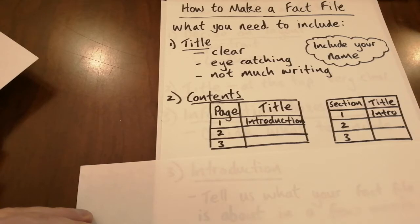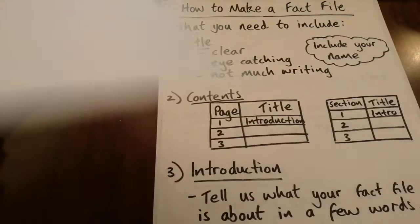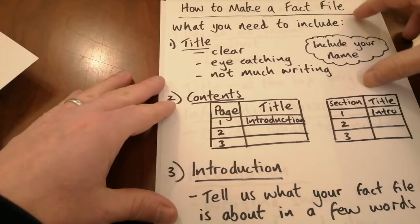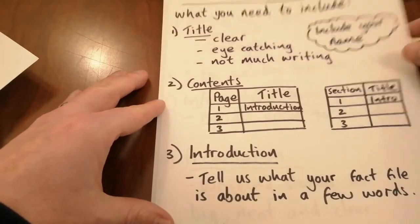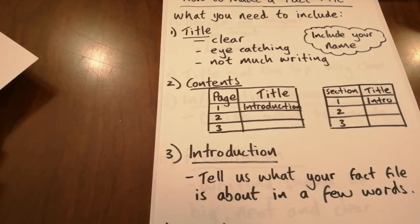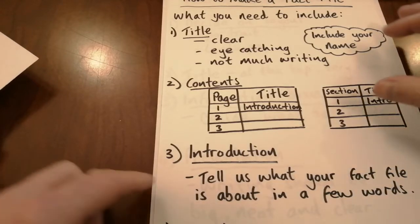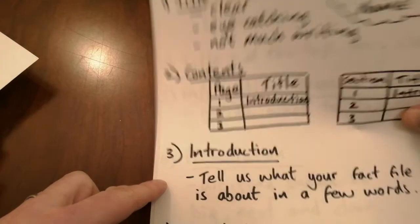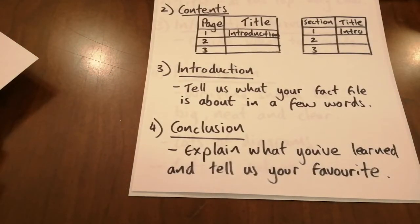Each section gets a title, so that will tell whoever is reading your fact file what they can expect next. You also need to include an introduction — tell us what your fact file is about in just a few words. For example: 'I'm going to be telling you all about how volcanoes are formed, what happens when they erupt, and I'm going to be talking about some of the most important volcanoes in the world.' Just something short like that. And lastly, you're going to have to include some sort of conclusion, explaining what you've learned, and you might even want to tell us what your favourite thing is.